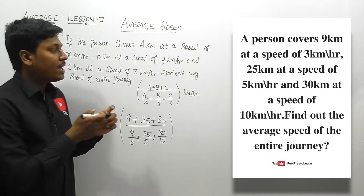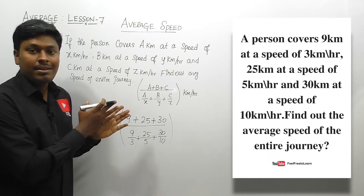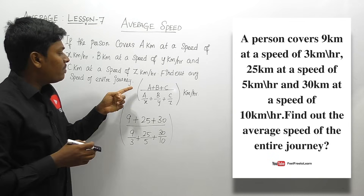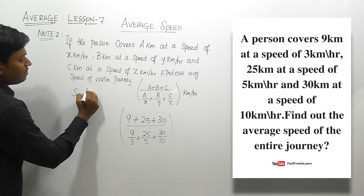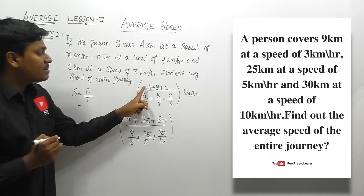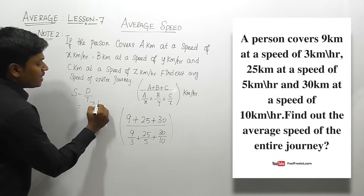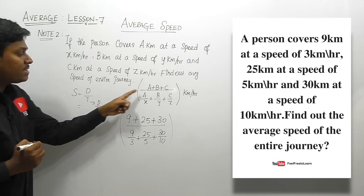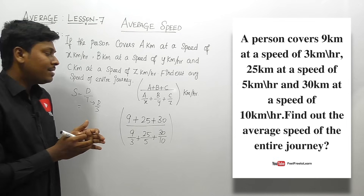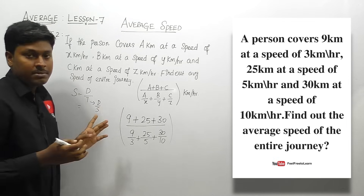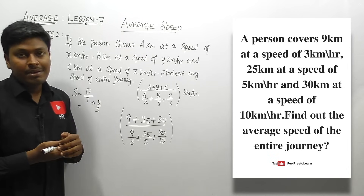You don't need to memorize this formula if you already know time and distance, because average speed equals total distance divided by total time, and time equals distance divided by speed. So the three time components are d1/s1, d2/s2, and d3/s3. If you're new to aptitude, memorize both formulas; after learning time and distance you'll understand the concept behind them.